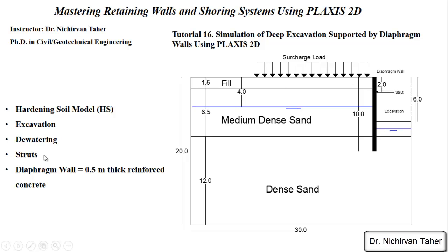You will also learn about dewatering. As you can see in this example, the water table is located four meters below the ground level and our excavation will be six meters, so we will need to lower the water table in the excavation area. We will also use a strut as a support.